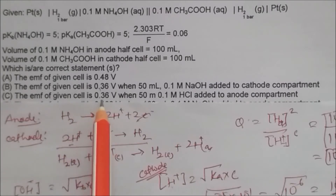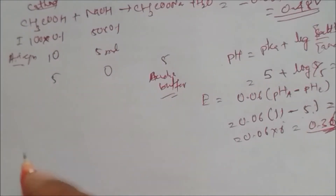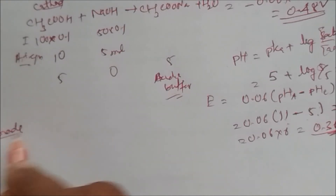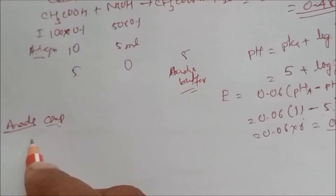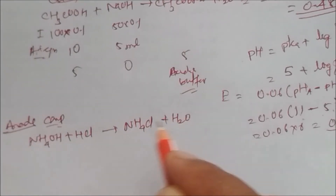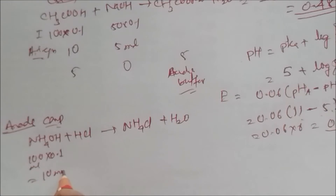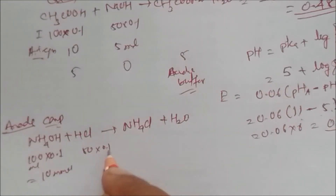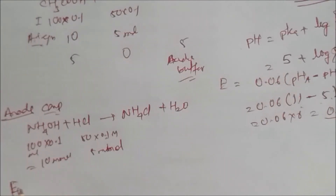The third option states EMF = 0.36 V when 50 mL of 0.1 molar HCl is added to the anode compartment containing ammonium hydroxide. The reaction is: NH₄OH + HCl → NH₄Cl + water. Anode has 100 mL × 0.1 M = 10 mmol NH₄OH; HCl provides 50 mL × 0.1 M = 5 mmol. At equilibrium: 5 mmol NH₄OH remains, 0 HCl, and 5 mmol NH₄Cl formed — again a buffer.